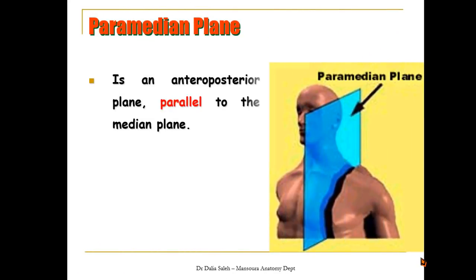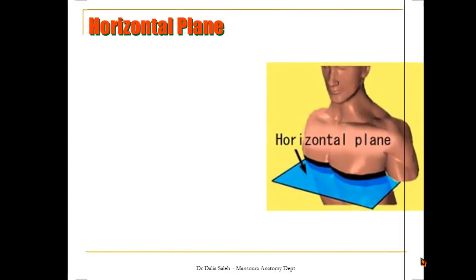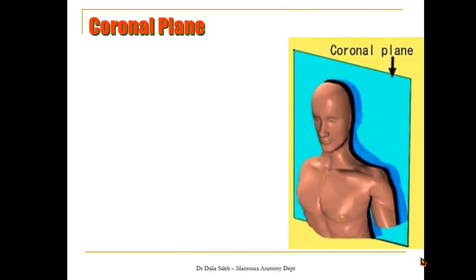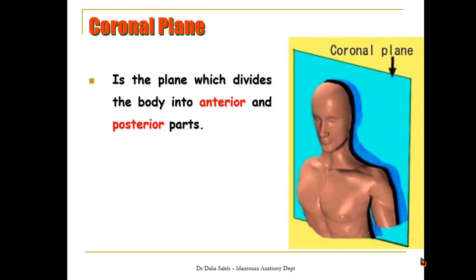The paramedian plane is another anteroposterior plane that lies parallel to the median plane and cuts the body into unequal right and left parts. The horizontal plane divides the body into upper and lower parts. While the coronal plane divides the body into anterior and posterior parts.